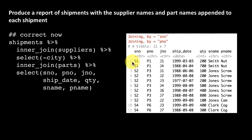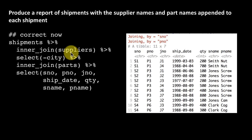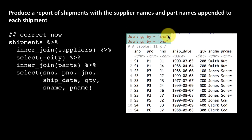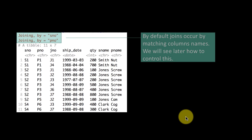Now we have all 11 rows. Earlier we got only 5 rows because the city column was interfering with the join. You need to think carefully about these things when doing joins. The nice thing is: if you don't specify the columns to join by, the join functions will tell you which columns they are joining by. Notice that this time it joins by supplier number only, and then by part number only — city is not involved. By default, joins occur by matching column names, and later we'll see how to explicitly control and specify what to join by.